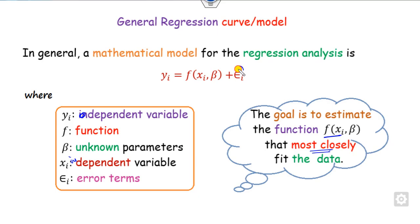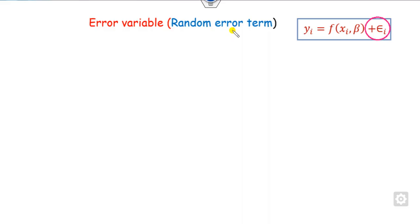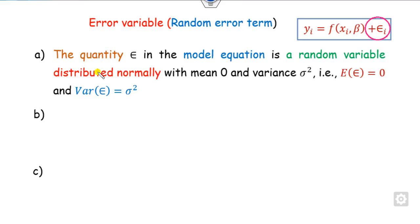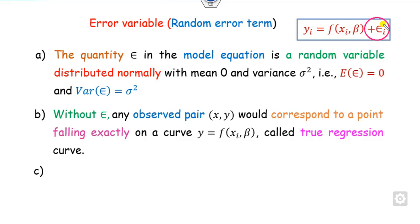Before proceeding, let us describe what ε (epsilon) is. Epsilon is called the error term or error variable. It has three features: first, it is a random variable; second, it follows a normal distribution with mean 0 and variance σ² (sigma squared); and third, the property of ε_i is that it is normally distributed.